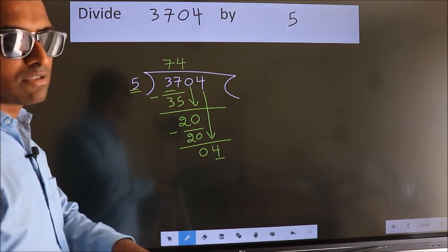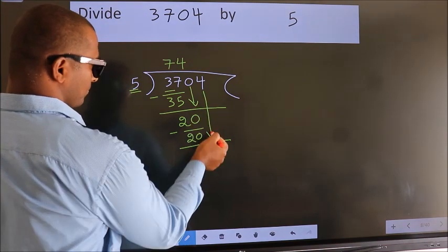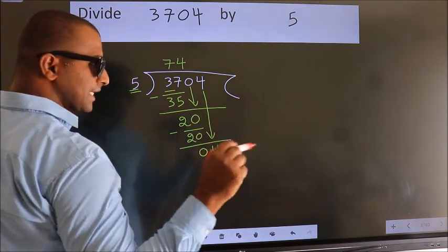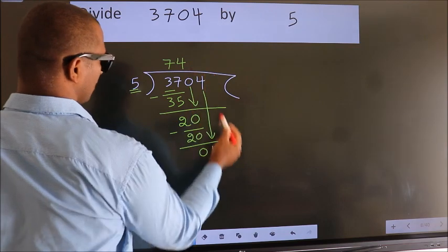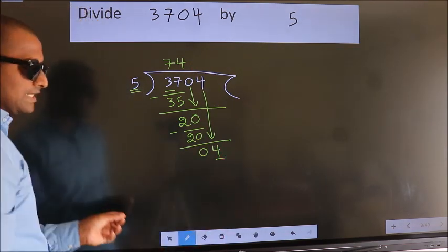Why is it wrong? Because just now you brought this number down. And in the same step, you want to put dot, take 0, which is wrong.